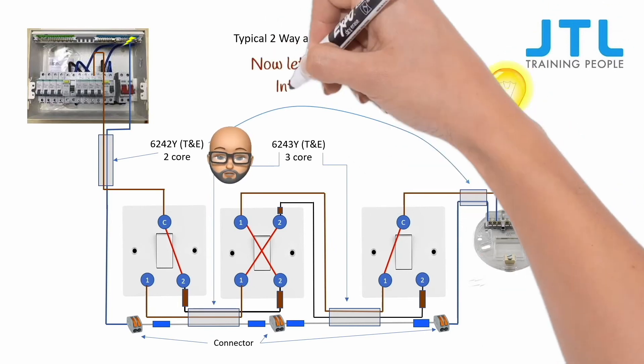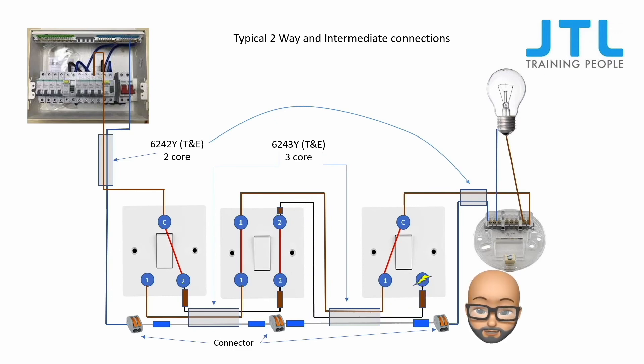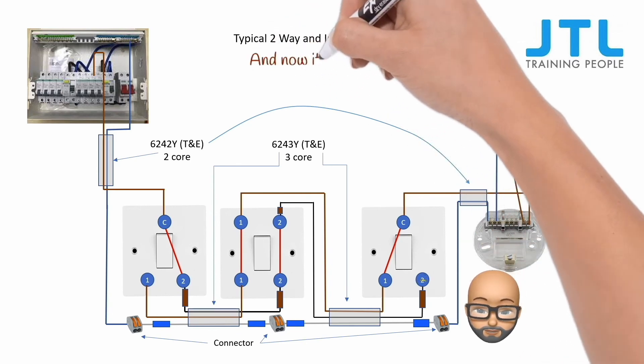Operating any switch now should turn the light off. Let's try the intermediate. The current now has nowhere to go, so the light is off.